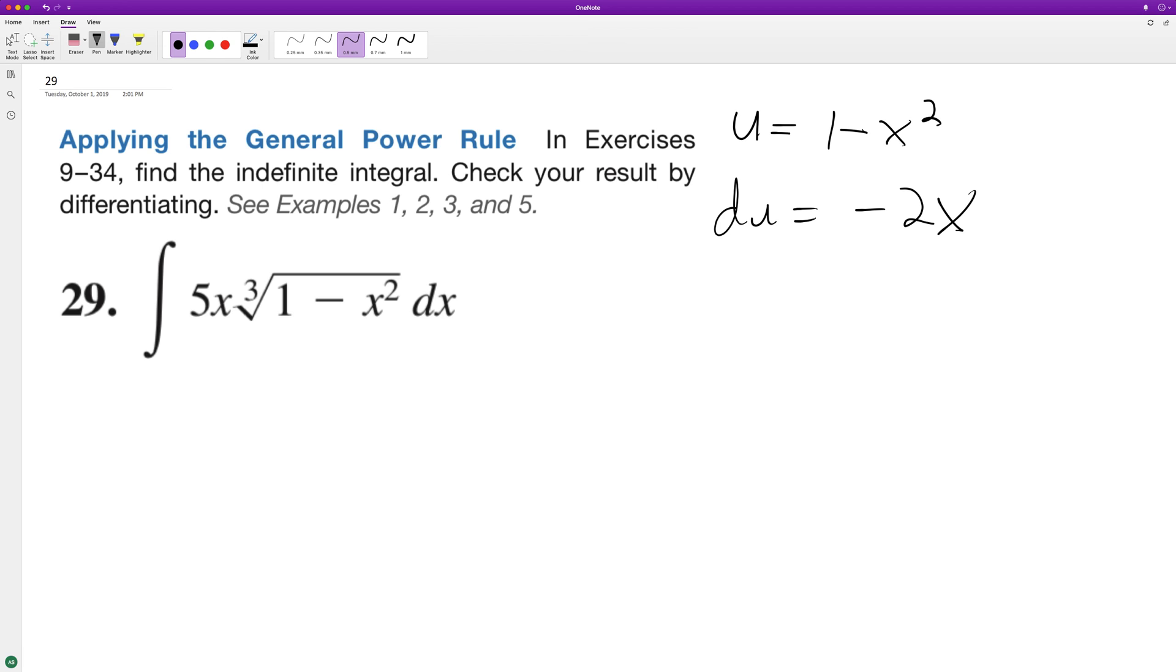All right, so we need to account for du not equaling 5x dx. To do that, we can set negative 5 halves du equal to 5x dx, so now we can set this up.